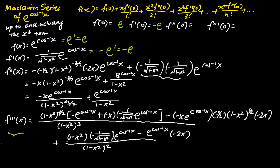For f''(0), substituting x equals 0 into f''(x): focusing on the first term, the numerator contains x which equals 0, so the first term is 0. For the second term, the denominator is 1 and the numerator is e to the power of 1. So f''(0) equals e.